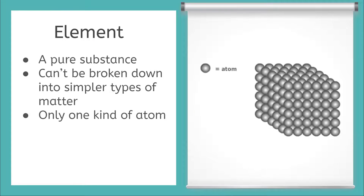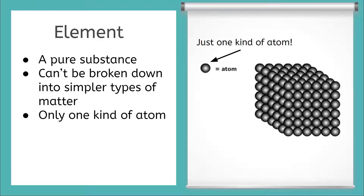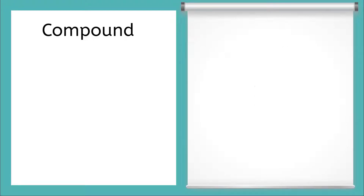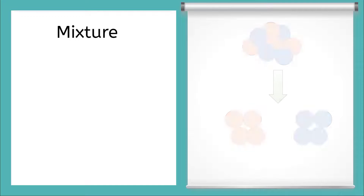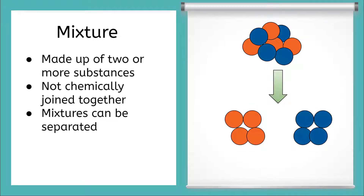An element is a pure substance that cannot be broken down into a simpler type of matter and consists of only one kind of atom. A compound is formed from atoms of different elements. The different atoms are joined when chemical bonds form and atoms stick together so strongly that the compound behaves like one substance. The chemical compound form depends upon what atoms it is made of and how they're joined together. A mixture is a substance in which two or more substances are mixed but not chemically joined together, meaning a chemical reaction has not occurred.